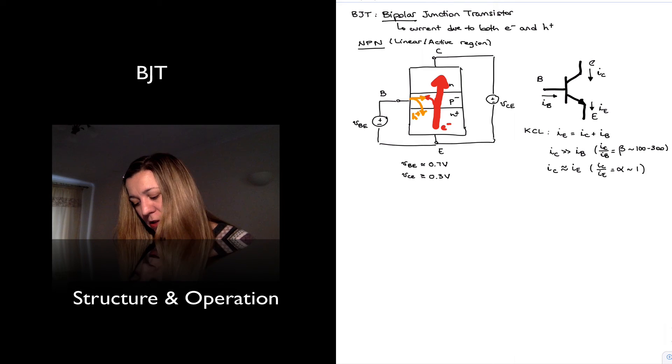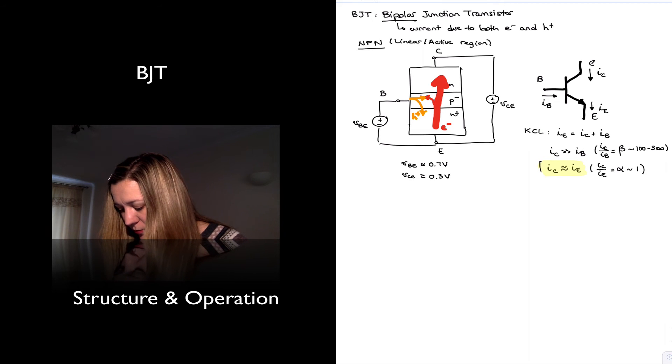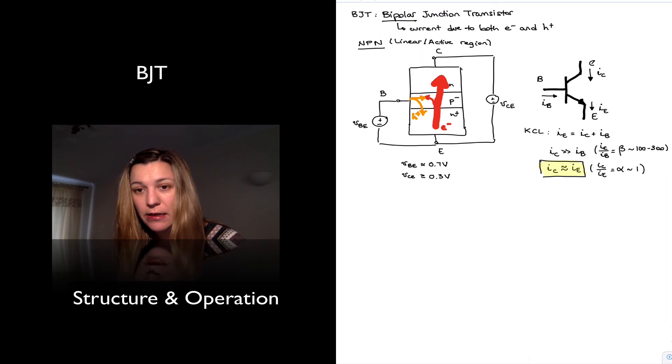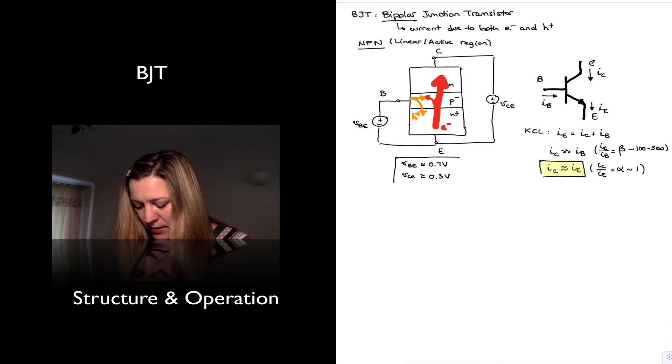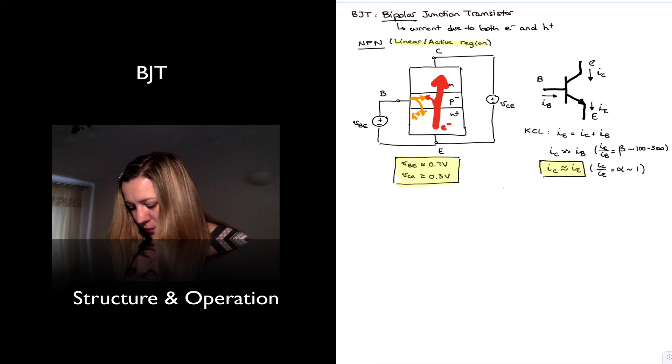So we normally, like I said, we are normally going to be making the approximation that the collector and emitter currents are equal to each other. So that's an important relationship. Again, I'm talking about the linear or active region. Let's go ahead and highlight this, just to make sure that we are talking about that region.